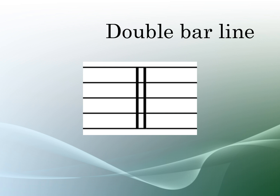A double bar line is used to show that a section of a piece of music has ended and the next section has begun, and they look like two thin vertical lines. For example, these might be used before a chorus or a bridge, before a key change, but they are generally used to signify an overall change in musical style.